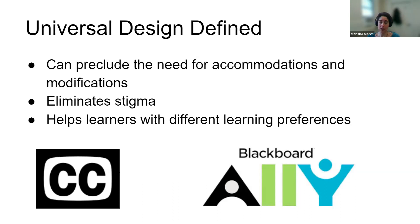Another tool we have at STIC is Ally in Blackboard, which provides students with alternative formats. Those alternative formats give students an MP3 audio version of a text uploaded to Blackboard. Ally in Blackboard can also do language translations, so if students have a preferred language other than English, they can use Ally to create an automatically generated language translation that would help them learn.